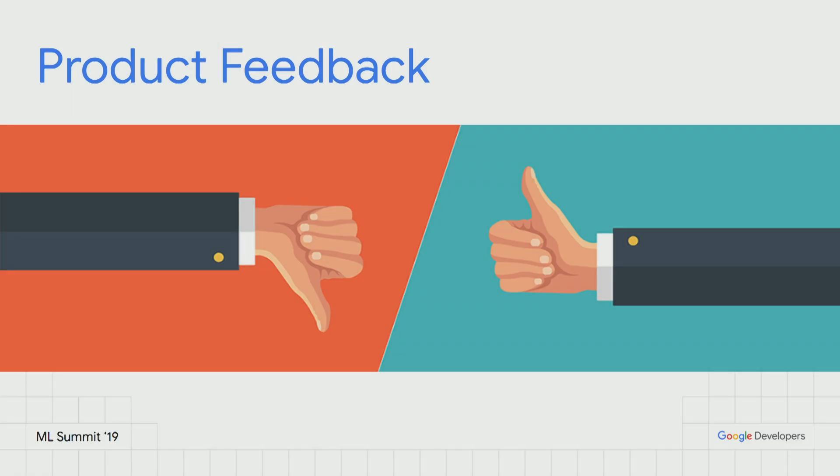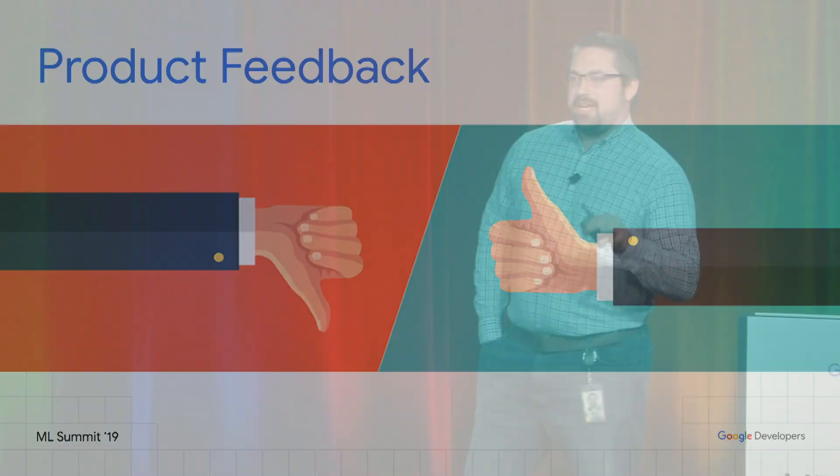Another thing the developer ecosystems team does is we're in a very unique position — we're not tied to a single product area. We have access to all the different product teams at Google, so we're able to hear your feedback and bring that directly to the product teams. Let us know what works, what you really like about the products, but also be very candid about what doesn't work. This goes not just for machine learning but for any Google product. We have a survey form that I'll share the link to later, and please come talk to any of us with a Google badge.